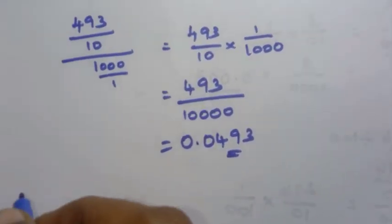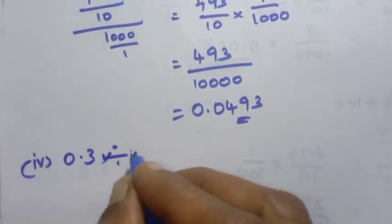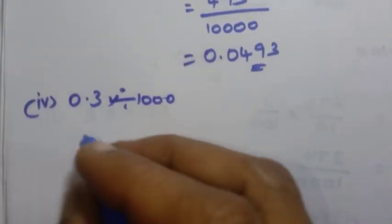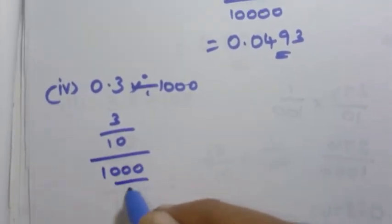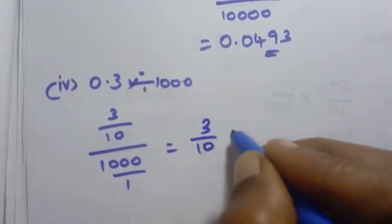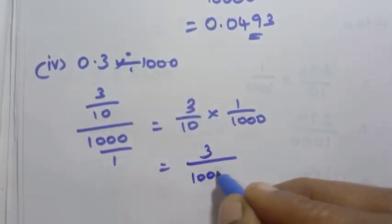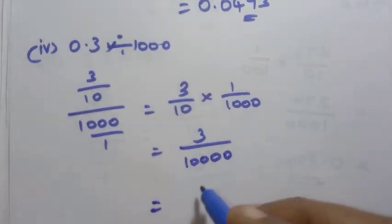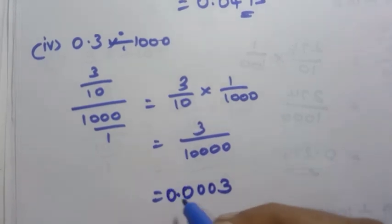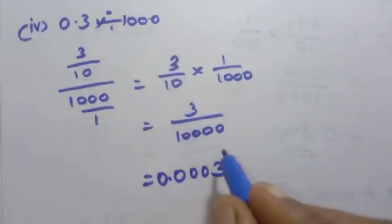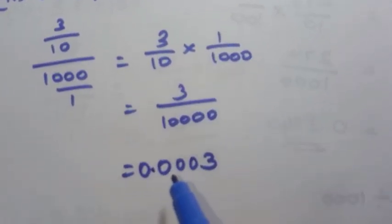Fourth sum: 0.3 divided by 1000. 0.3 is 3 by 10, divided by 1000. So 3 by 10 into 1 by 1000 equals 3 by 10000 — that is 4 zeros. With 4 numbers, placing the point before 4 zeros gives 0.0003 as the answer.